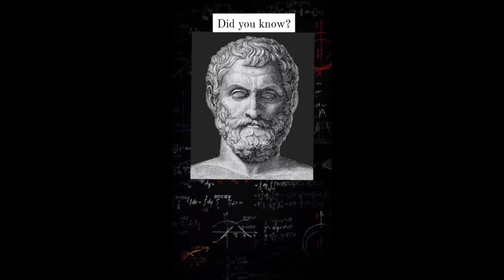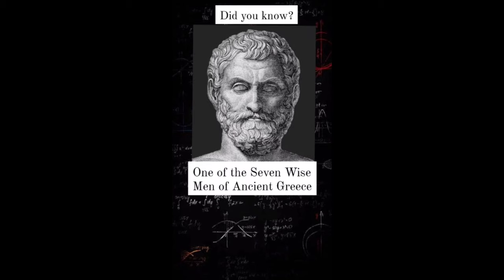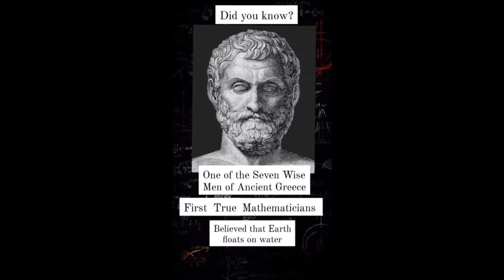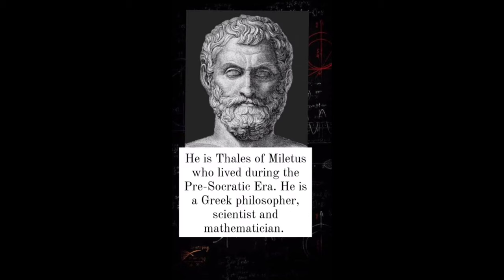Did you know? The man that you are facing is one of the seven wise men of ancient Greece, the first true mathematician, and he believed that Earth floats on water. He is Thales of Miletus who lived during the pre-Socratic era. He is a Greek philosopher, scientist, and mathematician.